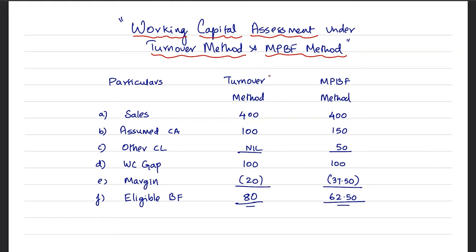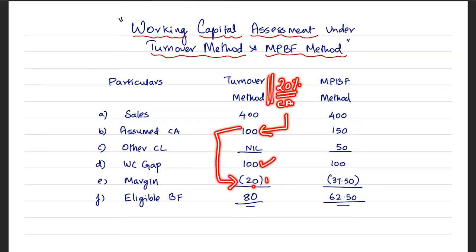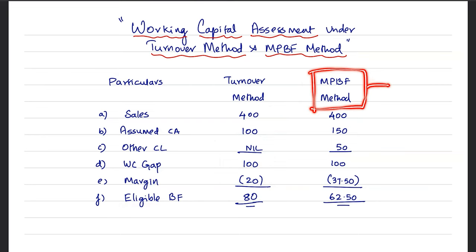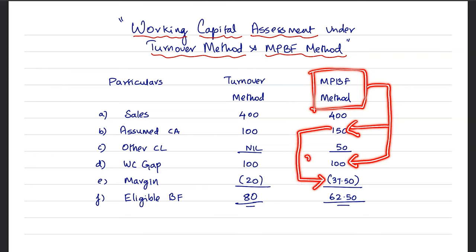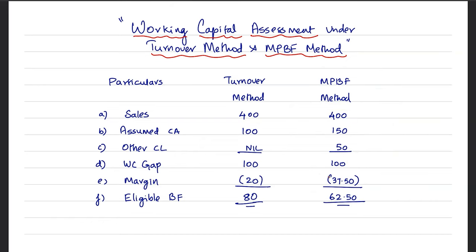The next assumption under the Turnover Method is with regard to margin. This method assumes a 20% margin on current assets. The current asset is 100, so 20% of 100 is 20. It means 20 has to be funded by the promoters through long-term funds, and the balance — 100 minus 20 = 80 — is the eligible bank finance under the Turnover Method. Whereas in the MPBF Method, there is a specific criteria with regard to margin. The working capital gap is 100, but margin is not applied on the working capital gap — rather it is applied on the current asset itself. So the total current asset of 150, on which a margin of 25% is applied, gives 150 into 25% = 37.5. So 100 minus 37.5 means the eligible bank finance will be 62.5.